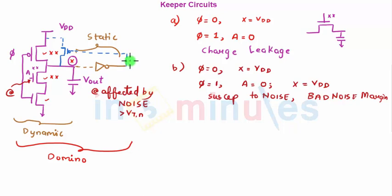So this is my keeper transistor. Now let's see what will this keeper do for the first problem. For the first problem, when phi was equal to 1 and A was equal to 0, that means initially let's see the sequence: phi equal to 0, so my X was VDD.